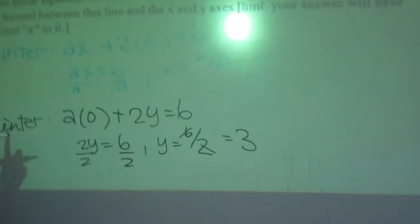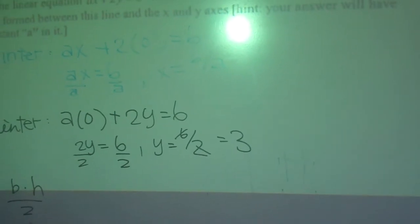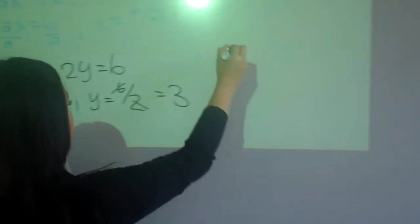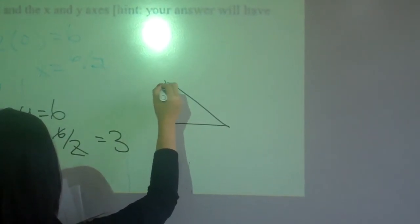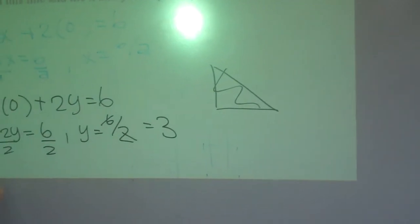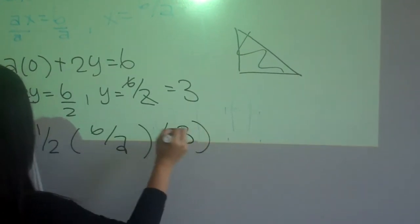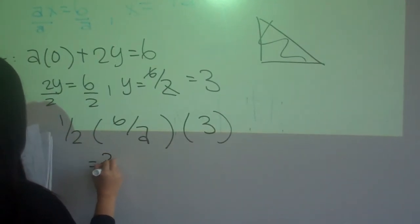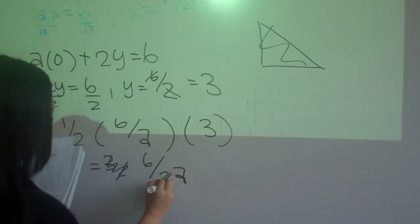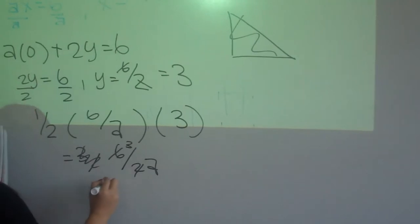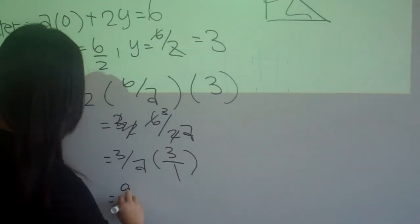And then to find the area, we know that b times h divided by 2 is the area. And then we put, so we'll put this. Let's see, 1 times 3. And then we'll get 6 over 2a, which is 3 over a. And then 3 over a times 2 times 3 over 1 equals 9 over a. This is our answer.